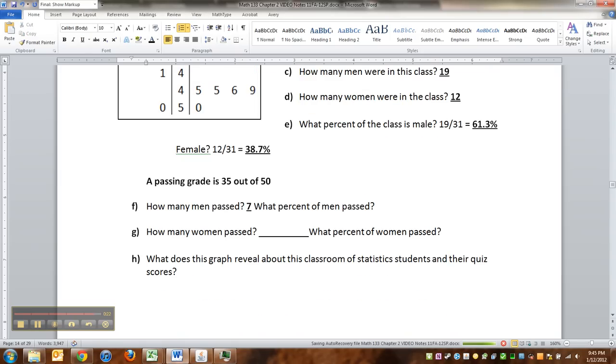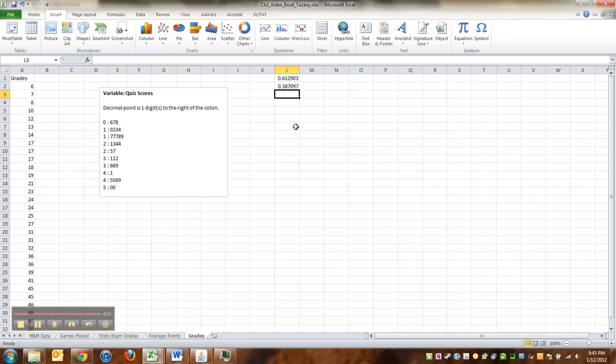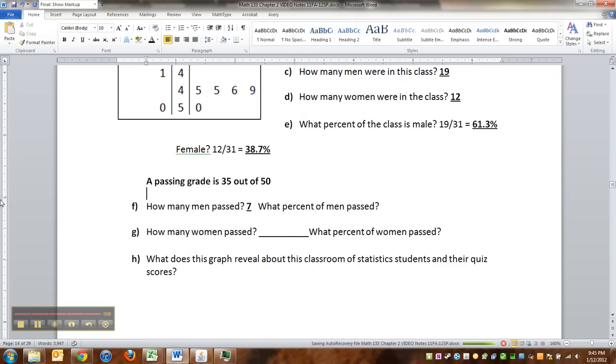Now, what percent is that of men? Well, of the men, there's only 19 men. So what you have to do is you take 7 divided by 19, and that would be 36.8%. I'll write that down. There we go. It's a different denominator because it says of men, which means you're looking at the 19 there.